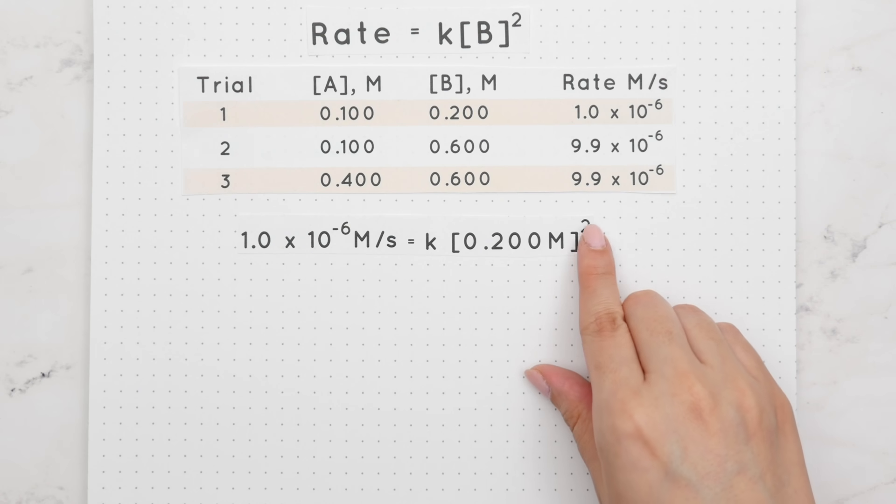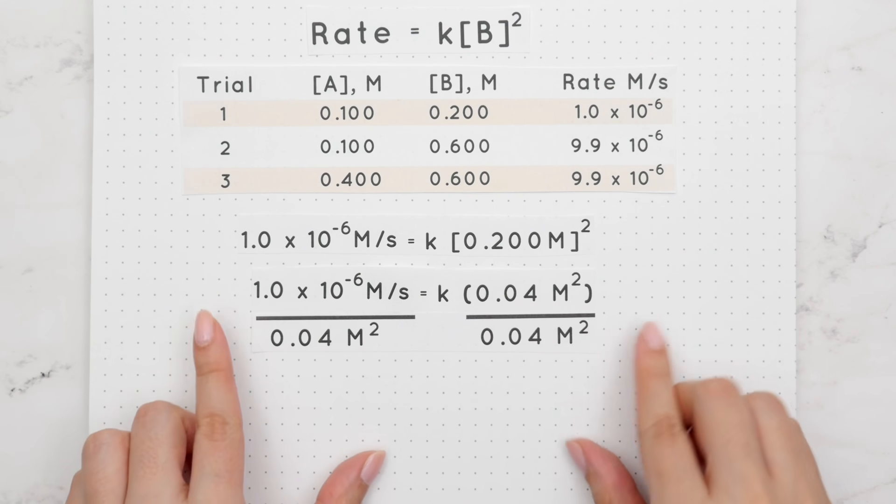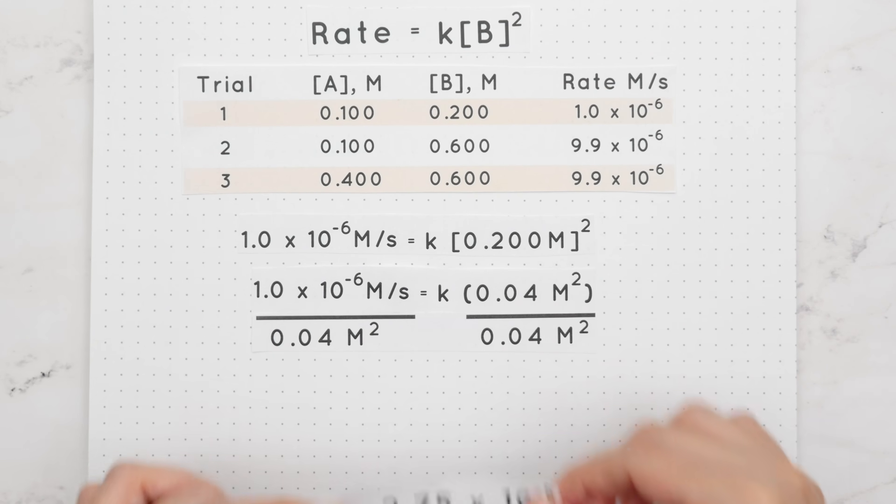Square the 0.2 and the unit and we will get this. Divide over that 0.04 to both sides and we get this value, but we need our units.